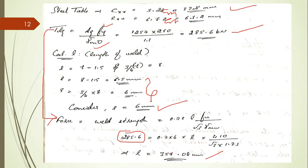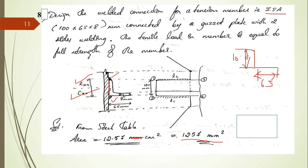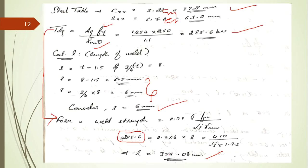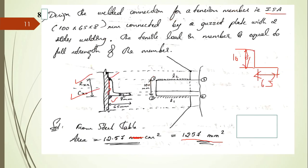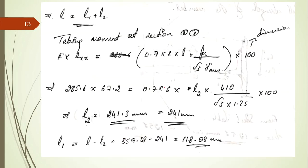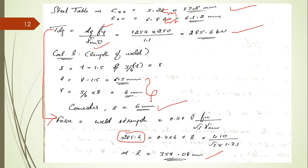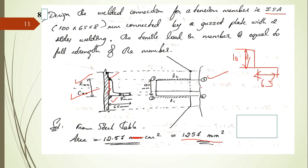Weld size S = 6 mm (from T minus 1.5 = 6.5, take 6 mm). Setting weld strength equal to plate strength: 285.6 × 10³ = 0.7 × 6 × L × (410 / (root 3 × 1.25)). Total required weld length L = 359.08 mm. Now find individual lengths L1 and L2 by taking moments.